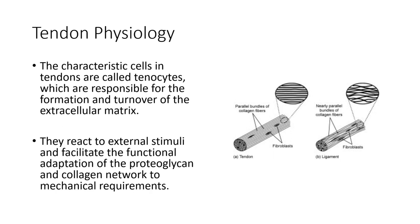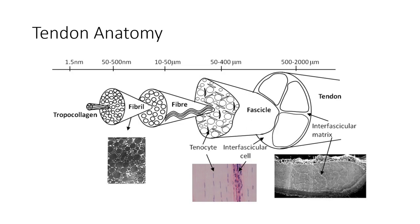Tenocytes react to external stimuli and facilitate adaptations of the proteoglycan and collagen networks within the ECM to new mechanical environments — helping produce more collagen and proteins in response to stressors. There is a schematic depiction of the transverse section showing fibril and fascicle packing of tropocollagen — with fibrils, fibers, and fascicles within a tendon — along with an image of tenocytes.